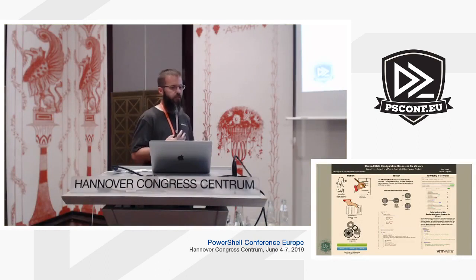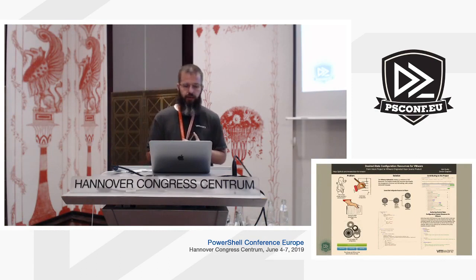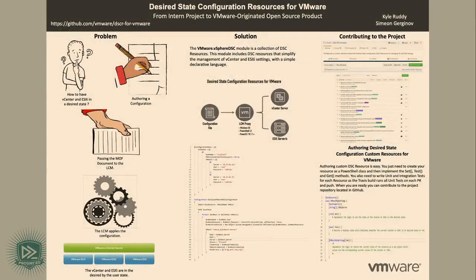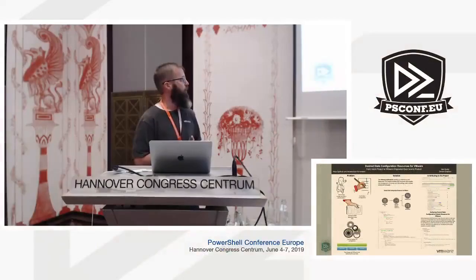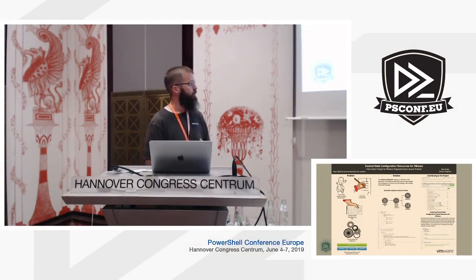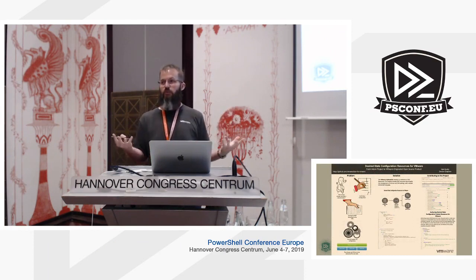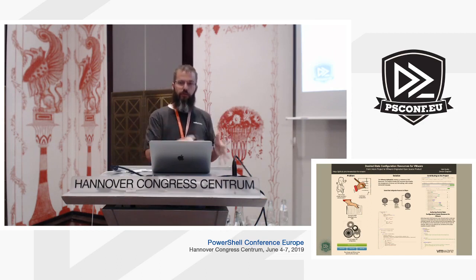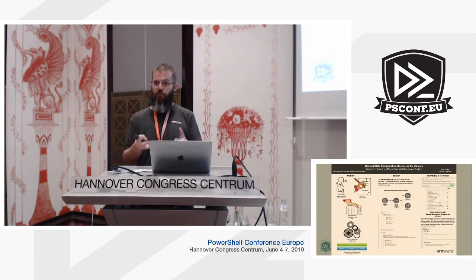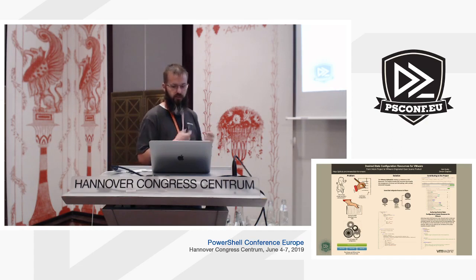This DSC resource project was originally an intern project — the brainchild of product manager Jake Robinson and one of our engineering managers. They concluded that instead of looking at resources for all these other products, we should just embrace DSC and cover everything. We brought an intern on board — Simeon — who was fantastic. If you look at the GitHub repo, we actually hired him full-time. He's out there reviewing and creating pull requests. This poster was created by the intern to present internally to VMware to get engineering effort behind it.